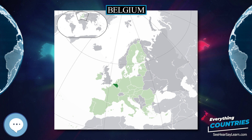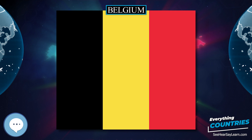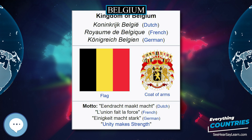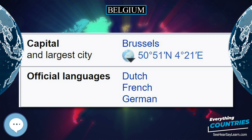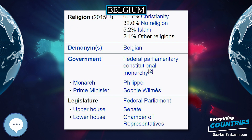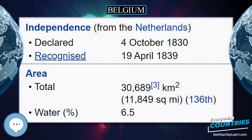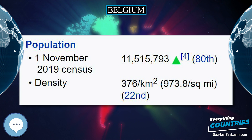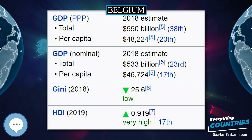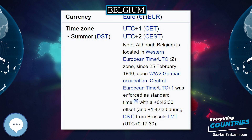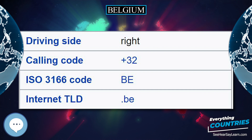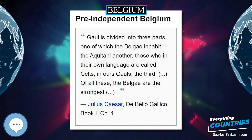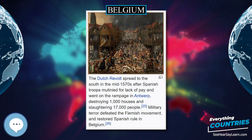Contributions to the development of science and technology have appeared throughout Belgium's history. The 16th-century flourishing of Western Europe included cartographer Gerardus Mercator, anatomist Andreas Vesalius, herbalist Rembert Dodoens, and mathematician Simon Stevin among the most influential scientists. Chemist Ernest Solvay and engineer Zénobe Gramme gave their names to the Solvay process and the Gramme dynamo in the 1860s. Bakelite was developed in 1907–1909 by Leo Baekeland. Ernest Solvay also acted as a major philanthropist and gave his name to the Solvay Institute, the Solvay Brussels School of Economics and Management, and the International Solvay Institutes for Physics and Chemistry. In 1911, he started the Solvay Conferences on Physics and Chemistry, which had a deep impact on the evolution of quantum physics and chemistry.